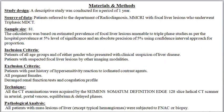The study was a descriptive study conducted for a period of one year. The source of data were patients referred to our department with focal liver lesions who underwent triphasic MDCT. The sample size was 81, calculated based on an estimated prevalence of focal liver lesions at 5% level of significance and absolute precision of 5% using a confidence interval approach for proportion.